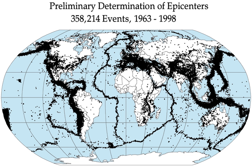A flood is an overflow of water that reaches land, occurring usually when the volume of water within a body such as a river or lake exceeds the total capacity of the formation. Floods may be secondary effects of earthquakes if dams are damaged. Earthquakes may cause landslips to dam rivers, which then collapse and cause floods. The terrain below the Saras Lake in Tajikistan is in danger of catastrophic flood if the landslide dam formed by the earthquake, known as the USOI dam, were to fail during a future earthquake, potentially affecting roughly 5 million people.